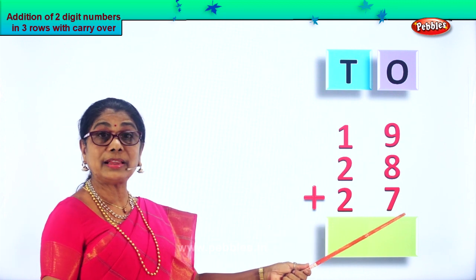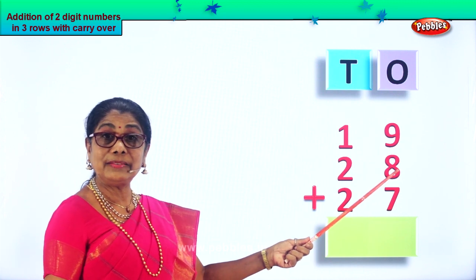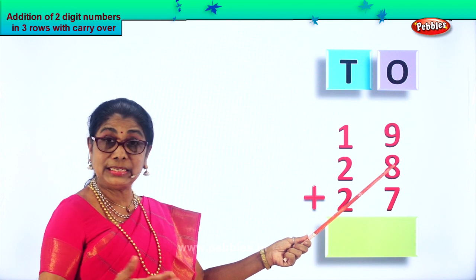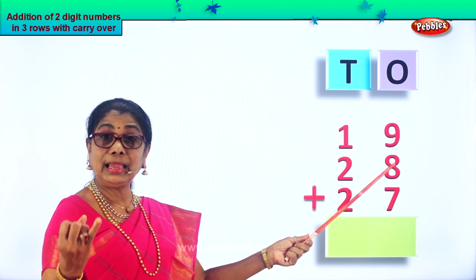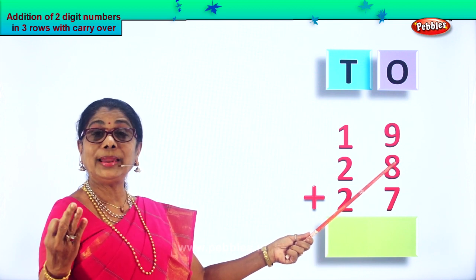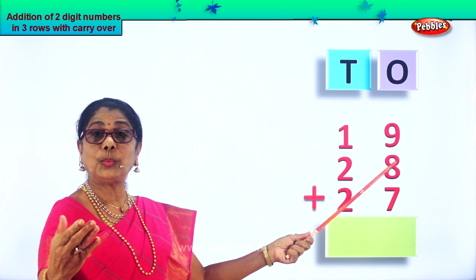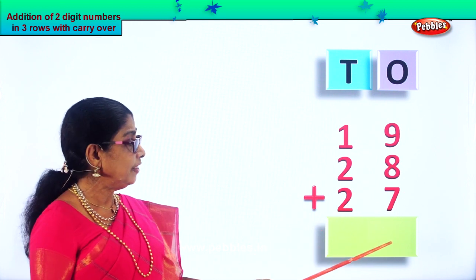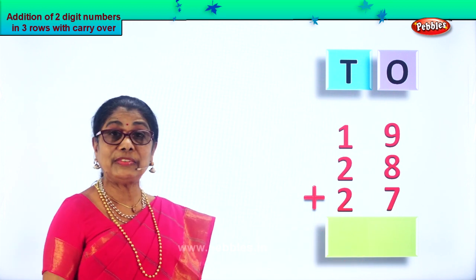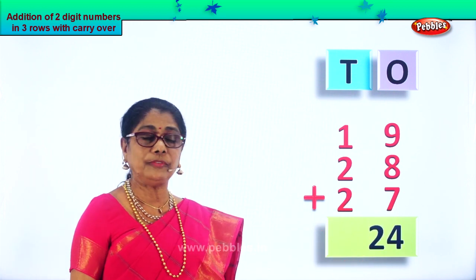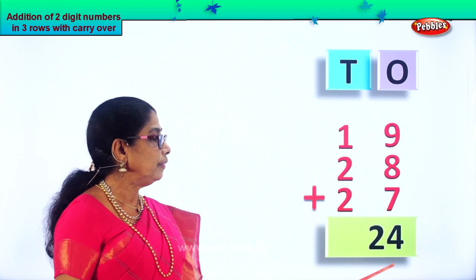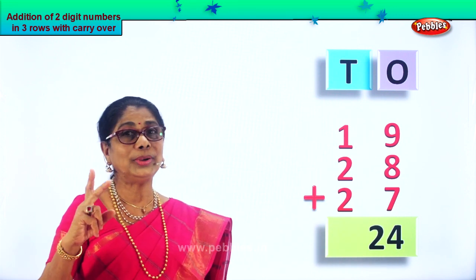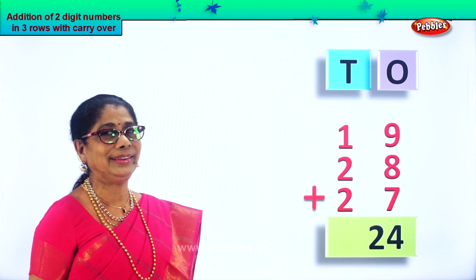Seventeen plus seven — seventeen in the mind, seven in your fingers. Seventeen, eighteen, nineteen, twenty, twenty-one, twenty-two, twenty-three, twenty-four. So we put down twenty-four. We have twenty-four ones — that is four ones and two tens, that is twenty.